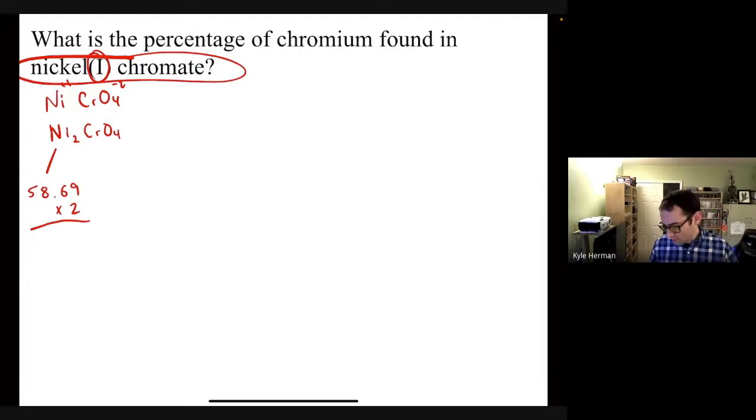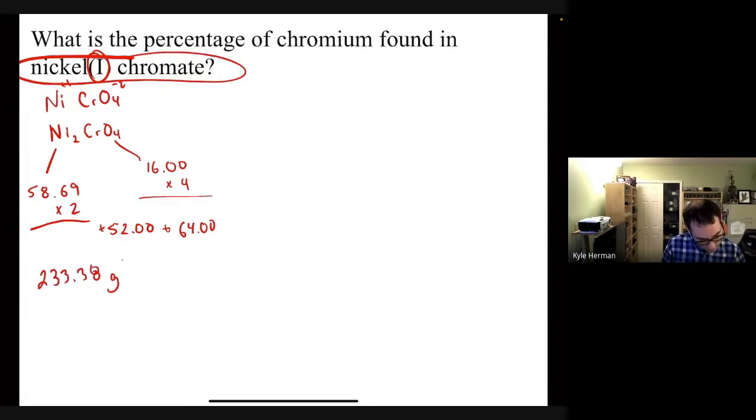All right, there's one chromium, which is 51.996. So we're going to round that up to 52.00. And then oxygen we know is 16.00 times four. So that's going to give us 64. Okay, let's add these up and see what we get. I got 233.38 grams per mole.